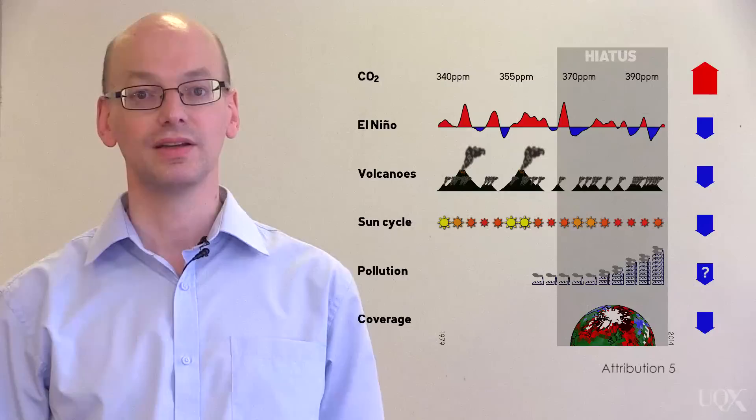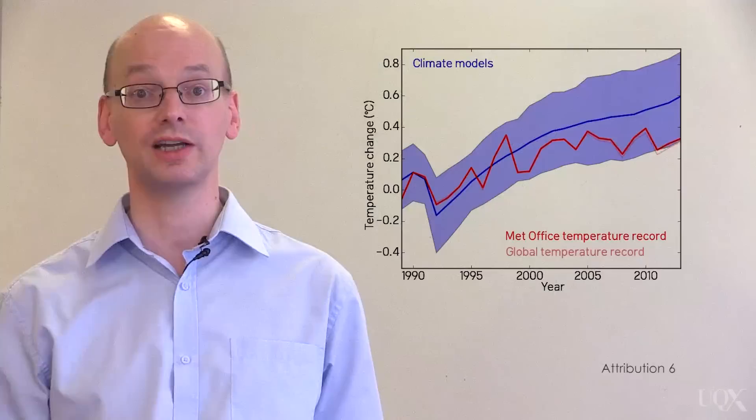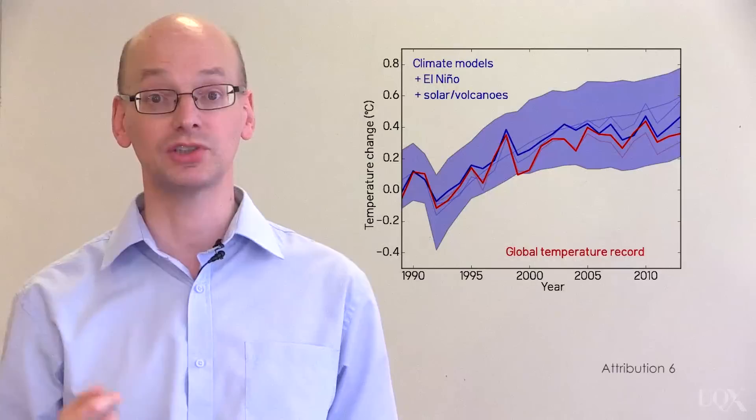Two recent studies have put all of these together. If we ignore the short term influences, climate models predict faster warming than we have observed. However, if we use global temperature estimates and add the influence of El Niño, volcanoes and the weak sun and pollution into the models, then the agreement is good.